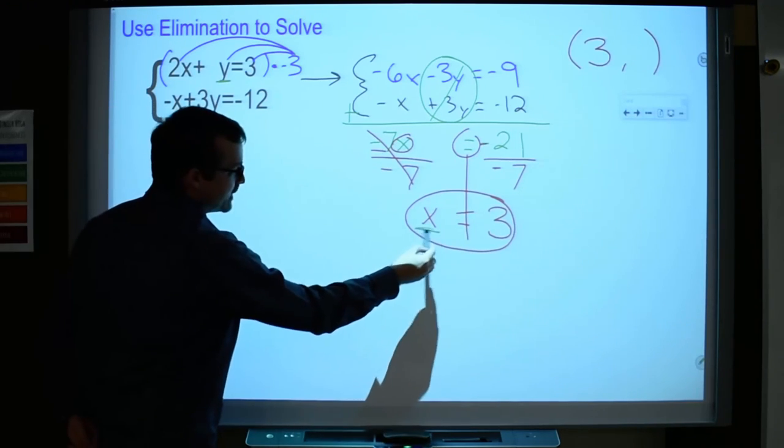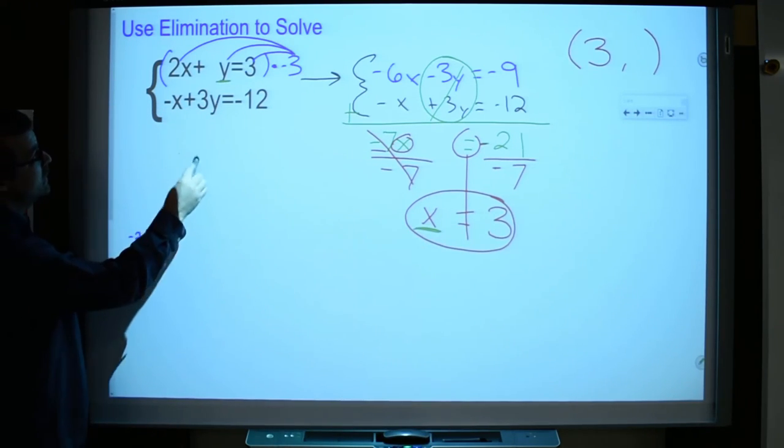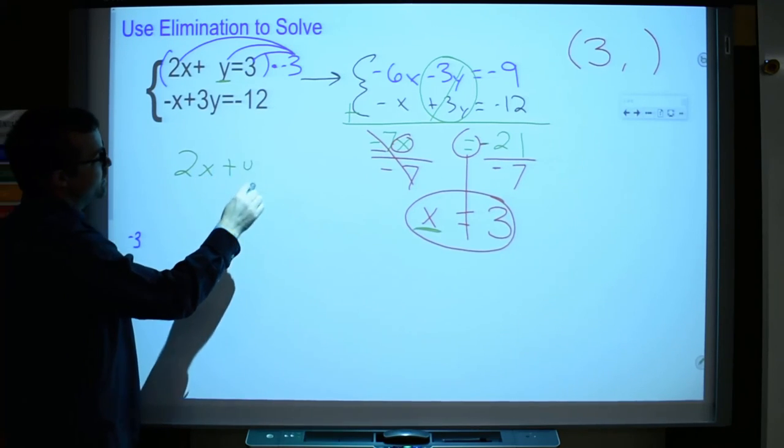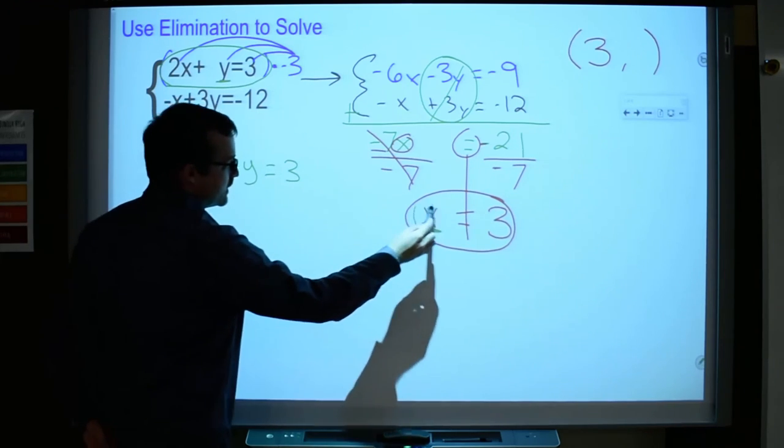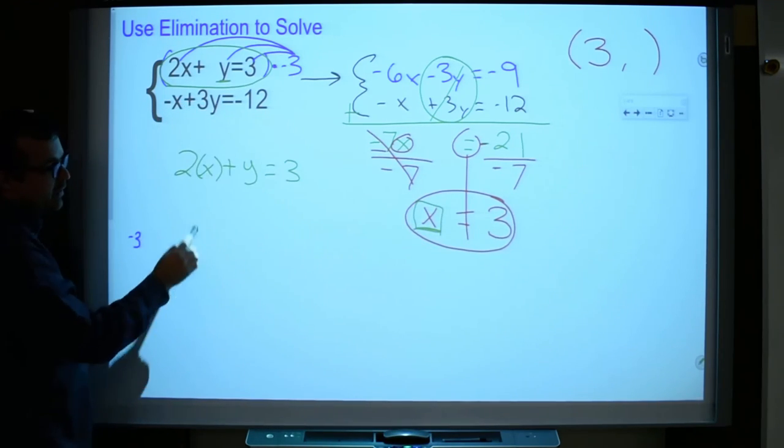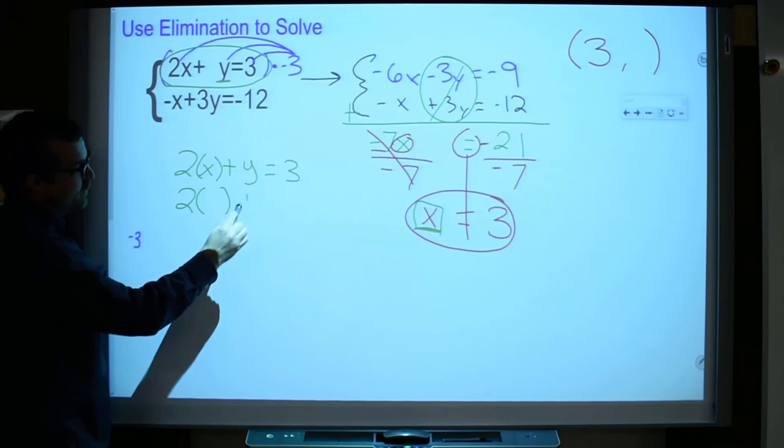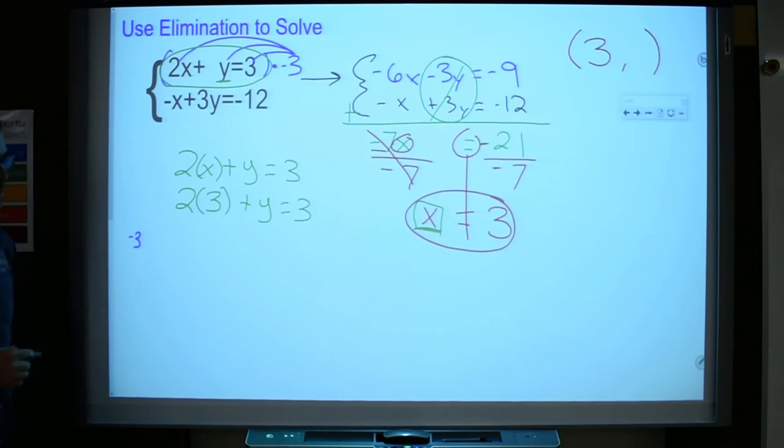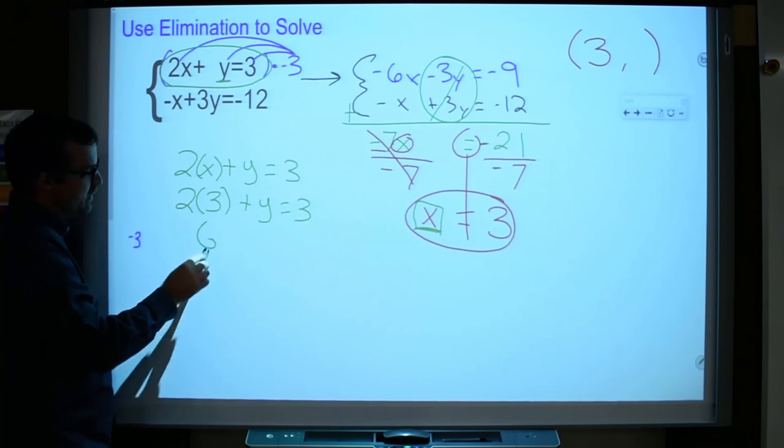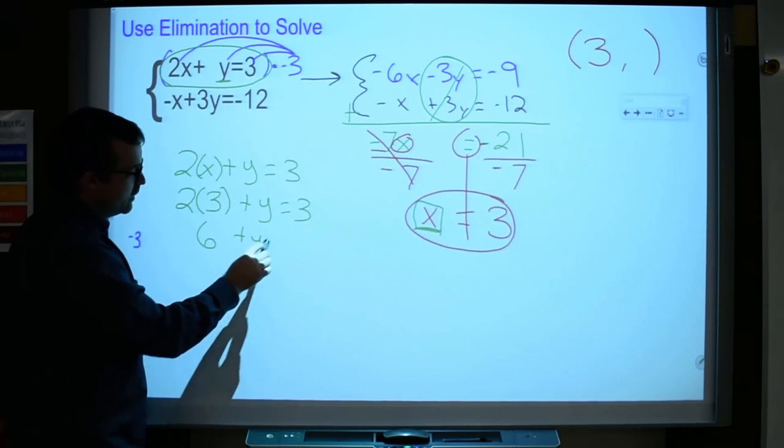So 2x plus y equals 3. And I'm going to replace the x with 3. So 2, let's take the x out first. And now let's plug in that 3. Substitution's done. And solve. 2 times 3 is 6 plus y equals 3.